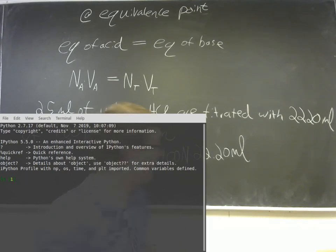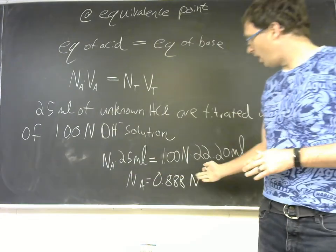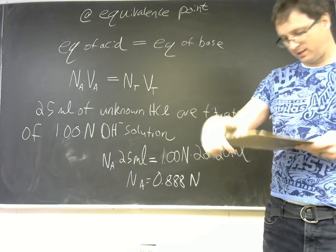So we're going to take 1 times 22.20 divided by 25. That's all we need. And it looks like it's 0.888 normal. So that is how you find the concentration of your unknown analyte. So that is the process called titration.